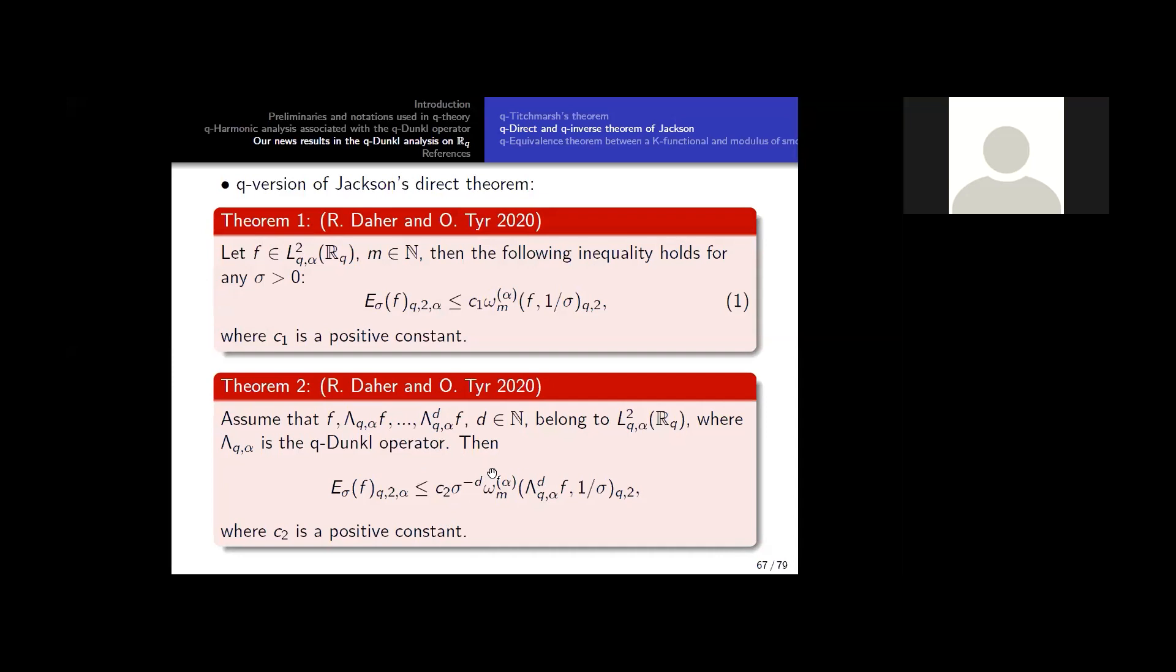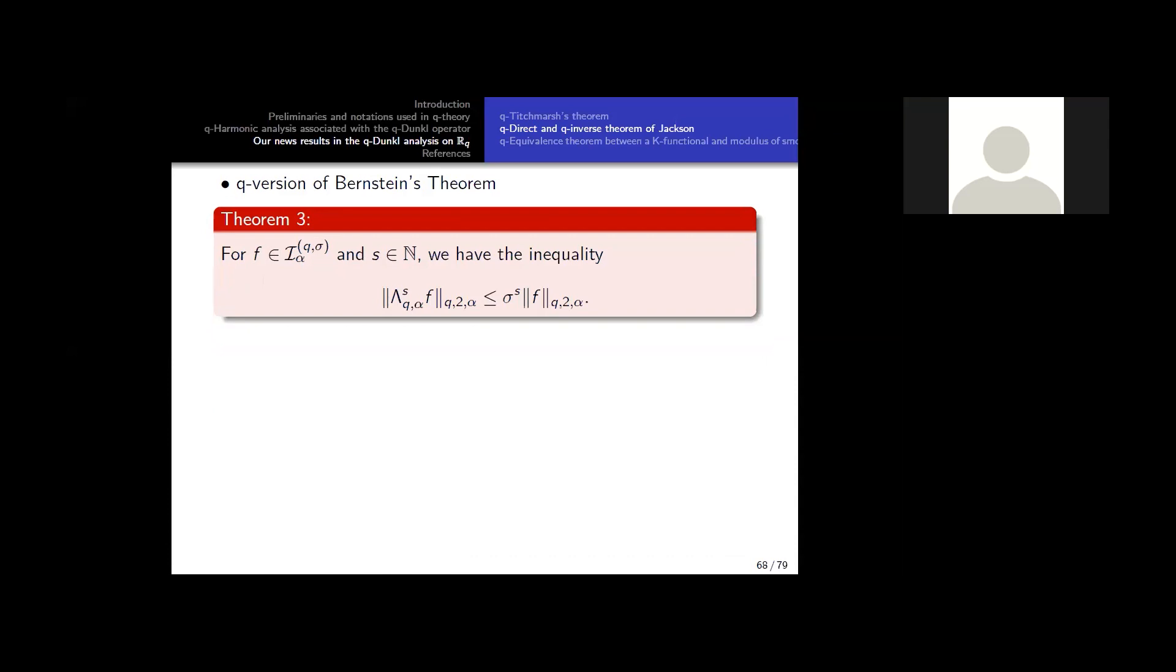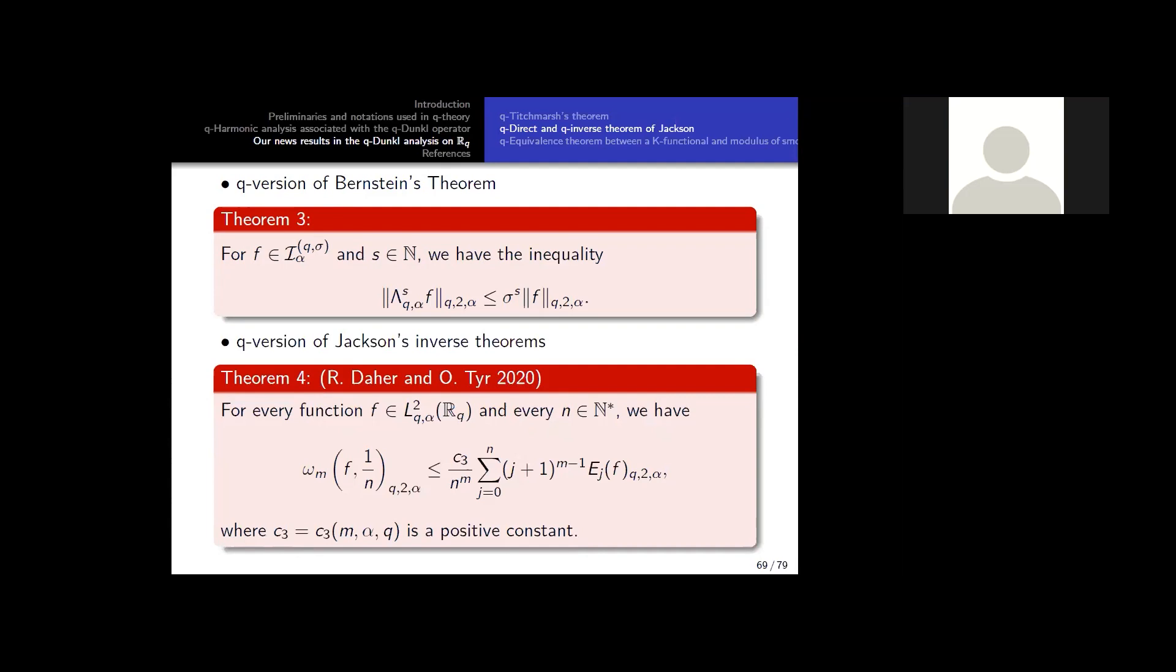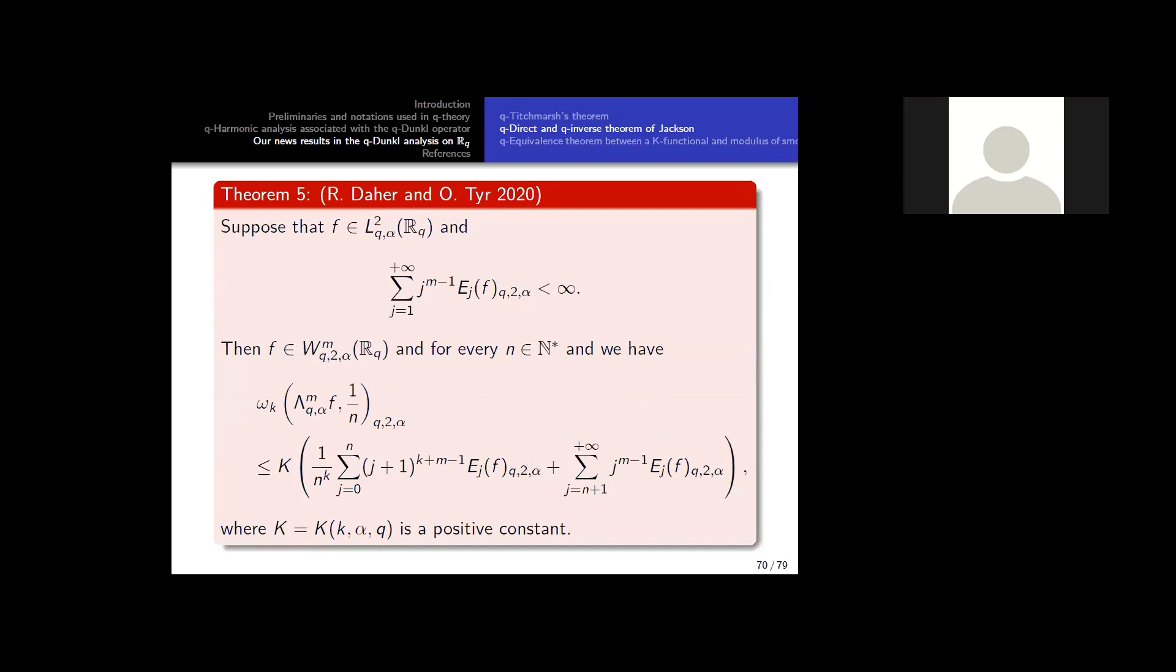So in approximation, we have the inverse theorem. So here we will prove the Q-analog of Jackson's inverse theorem. So here is the Q-version, a Q-version of Jackson's inverse theorem. We prove the analog of this theorem. Here is the Q-analog. And so we have the analog. In approximation theory, we find this estimate, and we prove the Q-analog of this estimate recently.